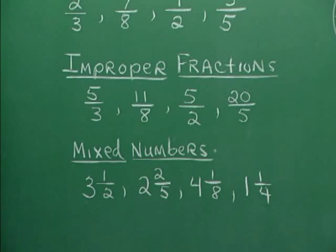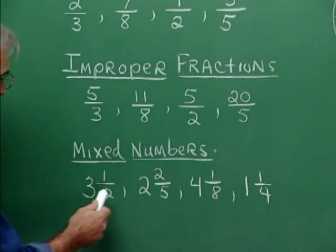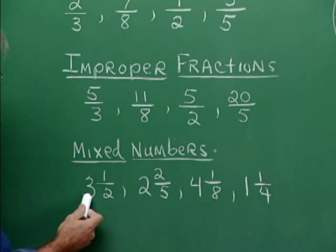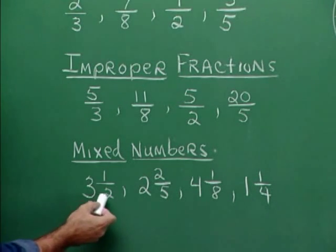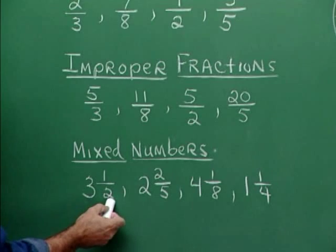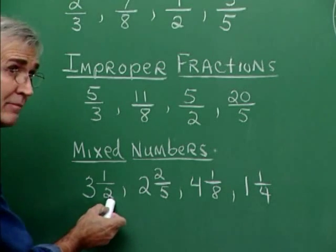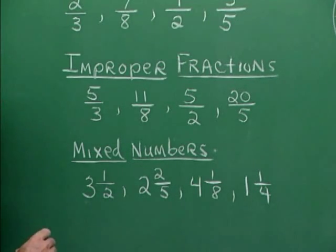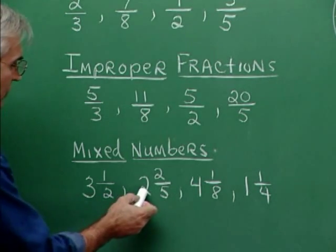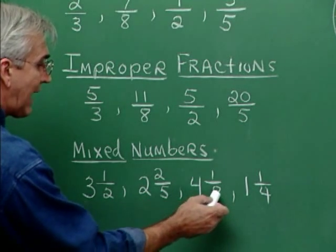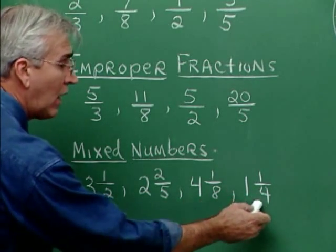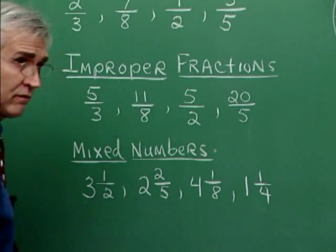These are examples of mixed numbers. Mixed numbers are composed of a whole number part and a fraction part. We read them like this: three and one-half, two and two-fifths, four and one-eighth, one and one-fourth. Notice the word 'and' between the whole number part and the fraction part.